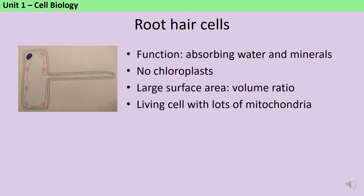Root hair cells cover the surface of plant roots, and they help the plant to more effectively absorb water and also mineral ions like nitrates and magnesium. They don't contain any chloroplasts, because they're under the ground and so there's no light available for them to absorb — it would just be a waste of resources. They have quite a specific shape to increase their surface area, because this increases the speed with which materials diffuse into the cell. Also, these are living cells and they contain lots of mitochondria. When the plant is trying to absorb something that's relatively scarce, it may need to use active transport, which requires a lot of energy, so having lots of mitochondria is crucial here.